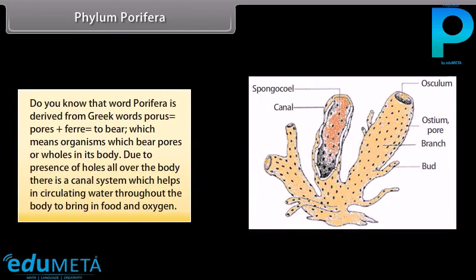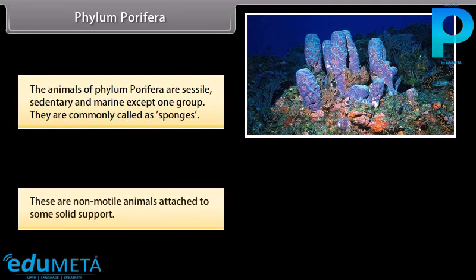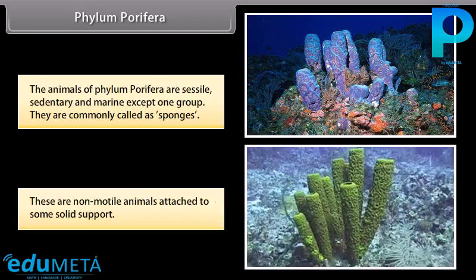Phylum Porifera. The word Porifera is derived from Greek words porous, meaning pores, plus ferre, meaning to bear — organisms which bear pores or holes in their body. Due to presence of holes all over the body, there is a canal system which helps in circulating water throughout the body to bring in food and oxygen. The animals of Phylum Porifera are sessile, sedentary, and marine except one group. They are commonly called sponges and are non-motile animals attached to some solid support.